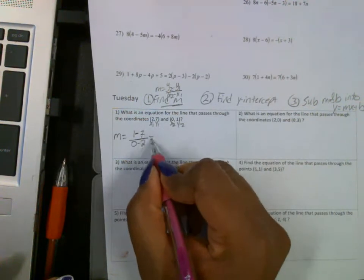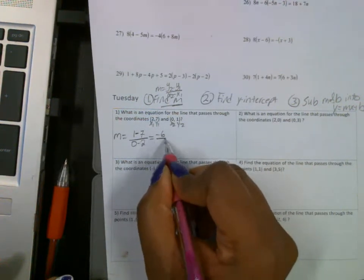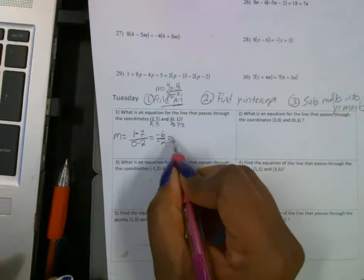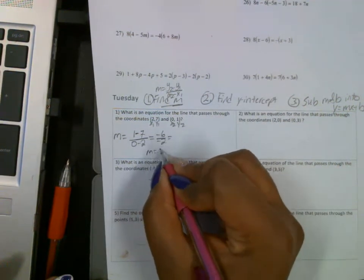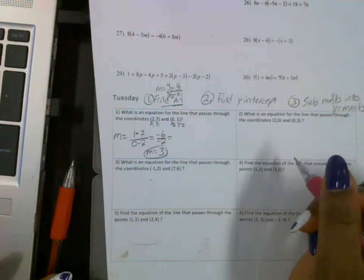All right, so this gives us negative 6 on the top and negative 2 on the bottom. So this is going to be a negative divided by a negative, which is positive 3. Sorry, y'all.